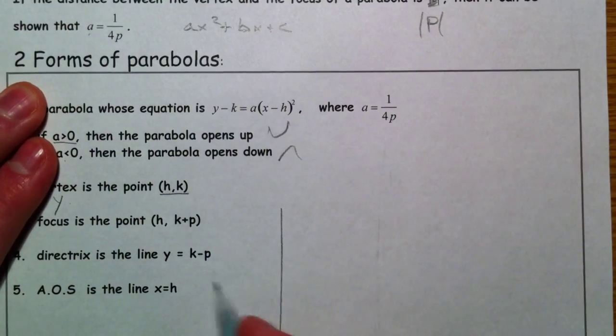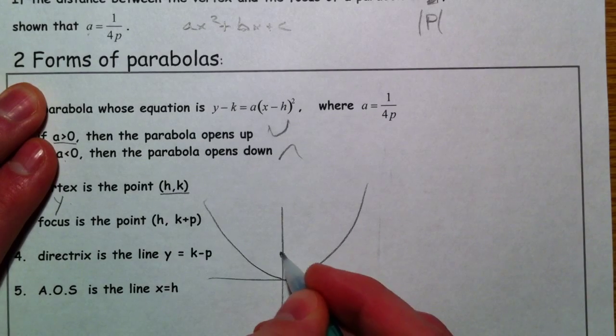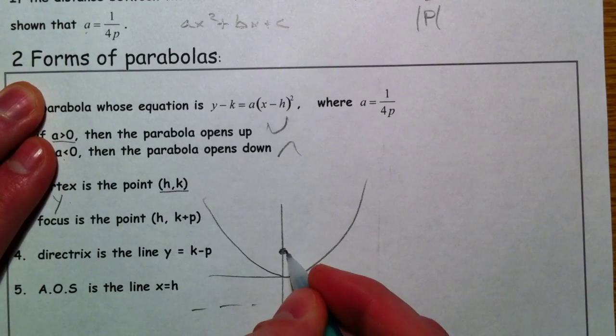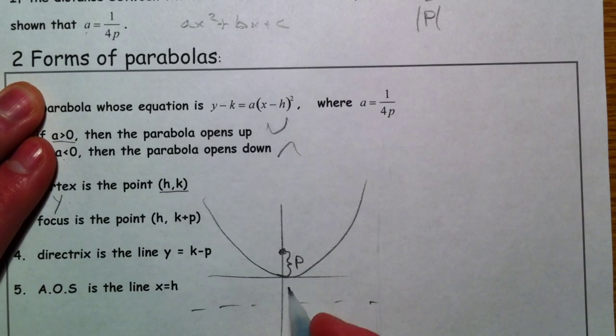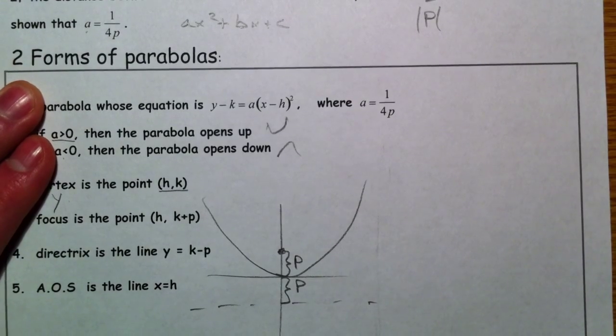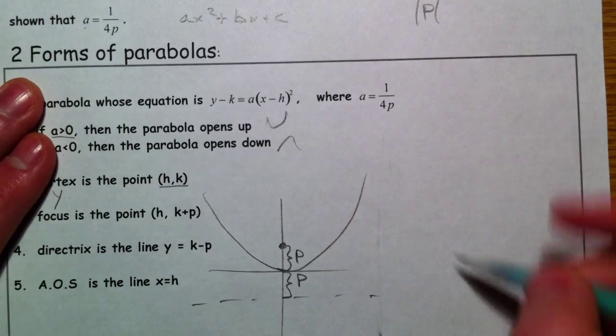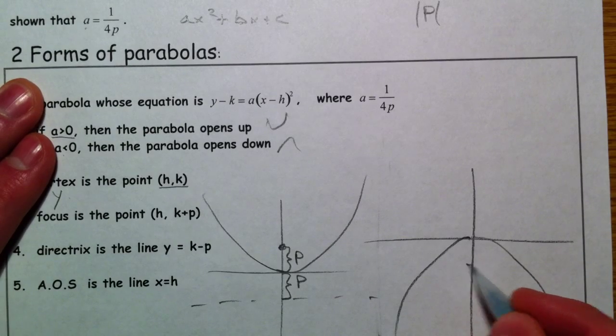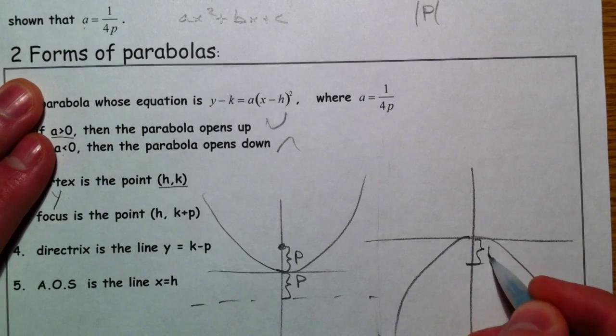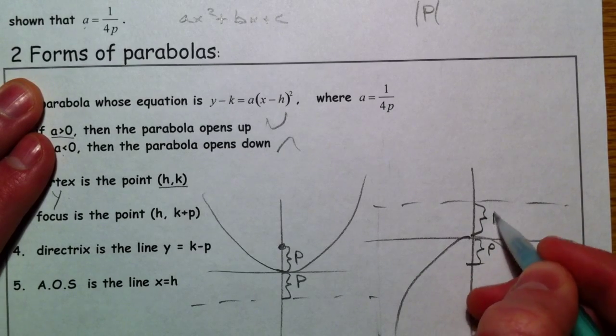And if it opens up, focus is going to be up here, directrix is going to be down here. And this is p away. And this is p away. And the p again comes from how it's related to a like that. It also opens down. Same kind of deal. This is p away. And the directrix is p away.